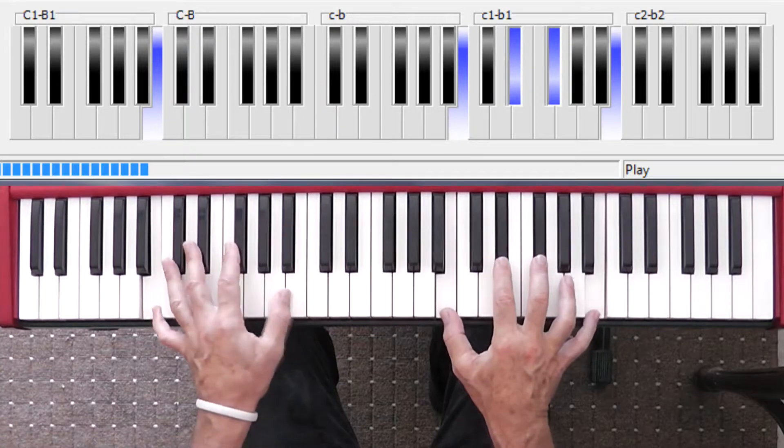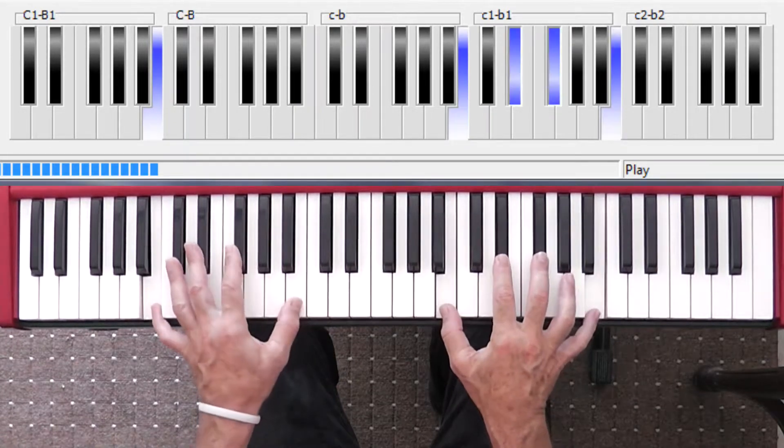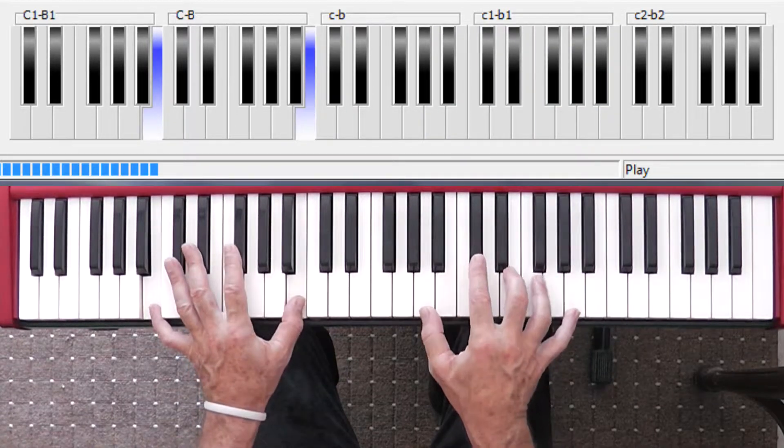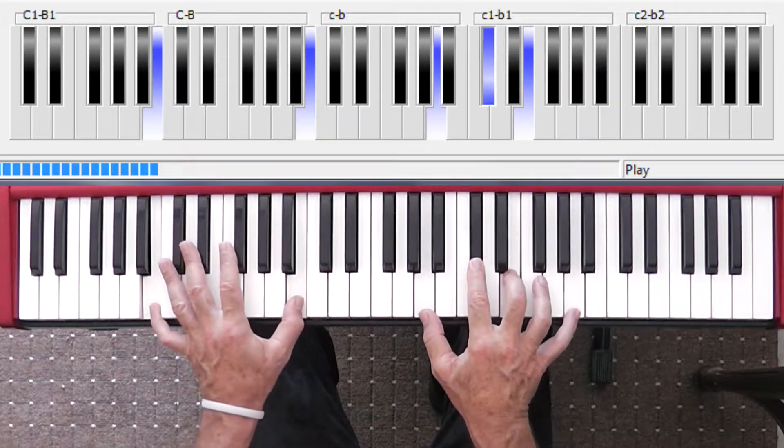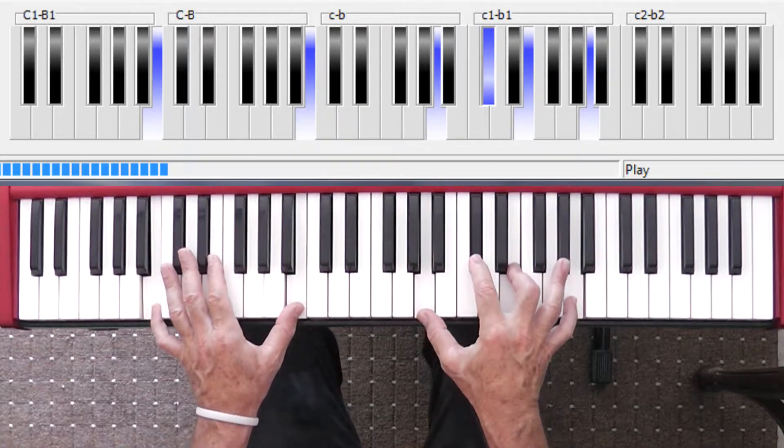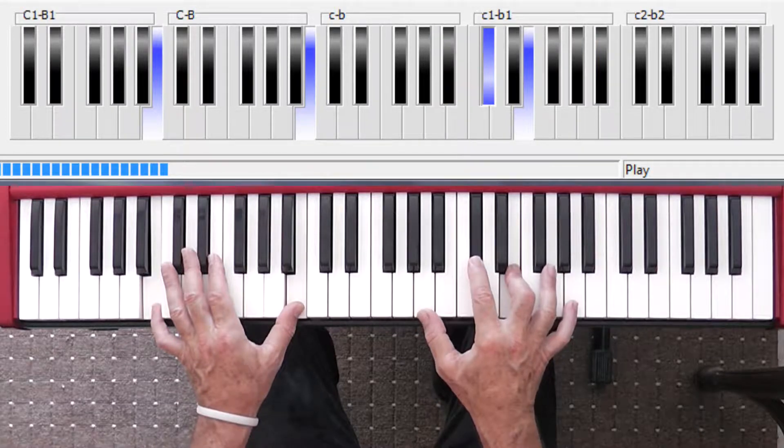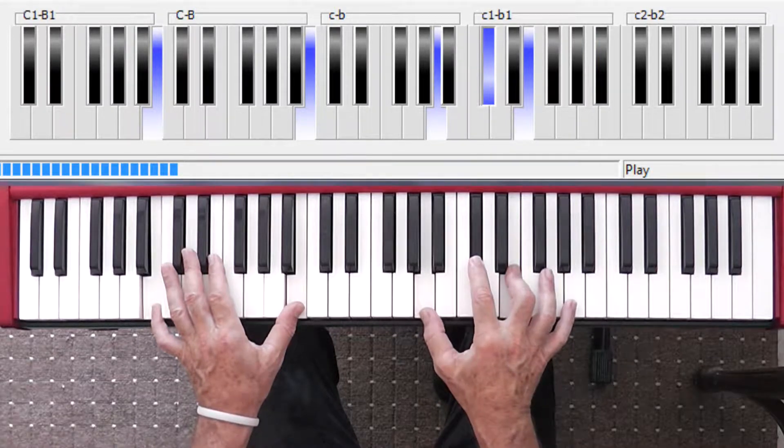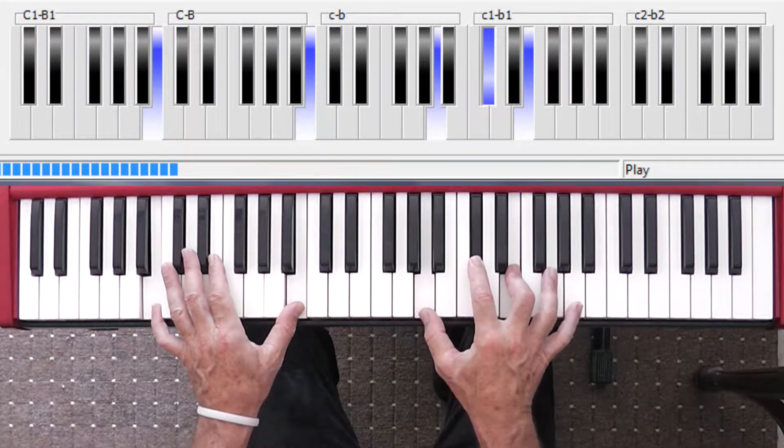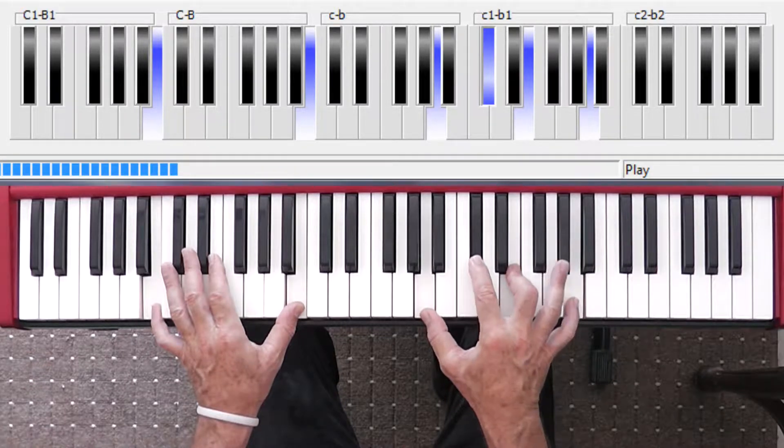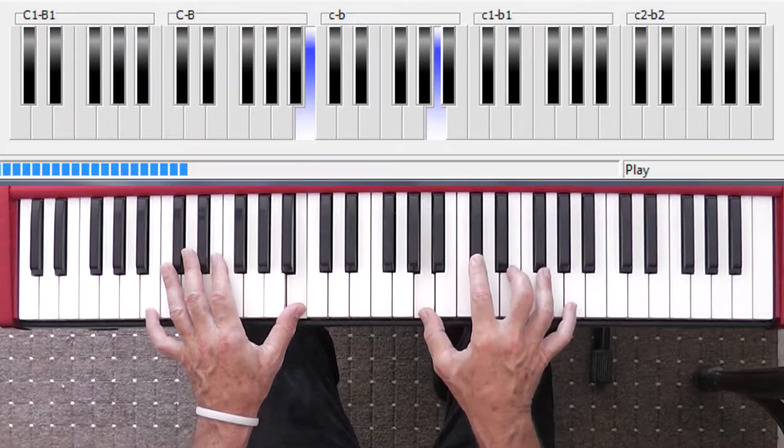B, A. The next chord we're going to learn is an E. So your outside digits are going to change. Thumb's going to come up and the little finger's going to go down.